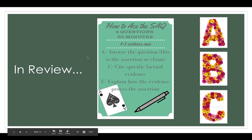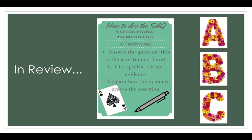So just in review: four question choices, you pick three, 40 minutes. Answer the question — identify the claim, cite specific factual evidence, and explain how the evidence proves the assertion. Remember, you do this as A, B, and C separately. Thanks for listening. If you have any questions at all, let me know. Have a great night. Cheers.